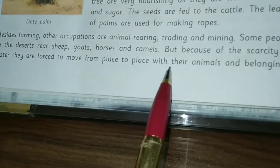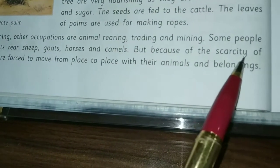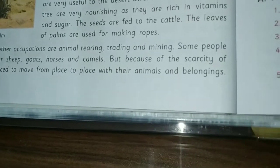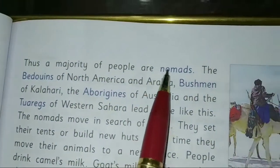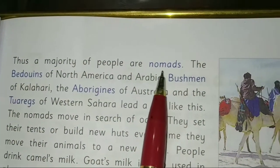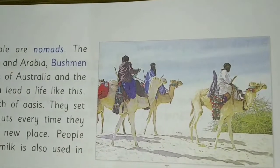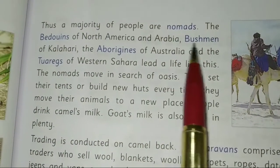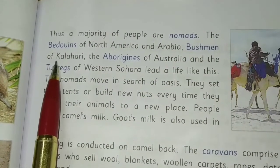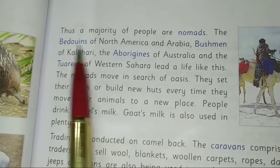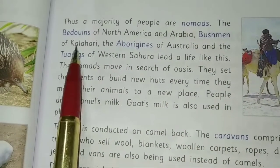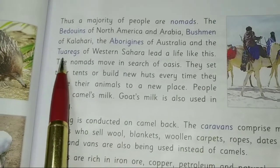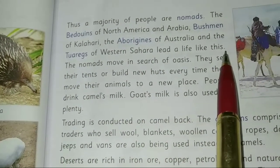Due to scarcity of water, desert people are forced to move from one place to another with their animals and belongings. Thus a majority of desert peoples are nomads — people who do not stay in one place. Examples include the Bedouins of North Africa and Arabia, the Bushmen of the Kalahari, the Aborigines of Australia, and the Tuaregs of the Western Sahara.